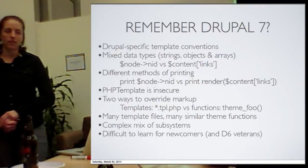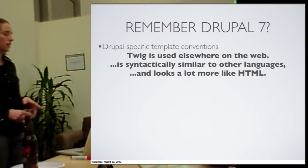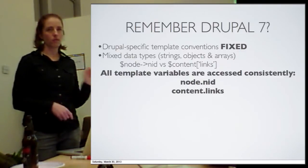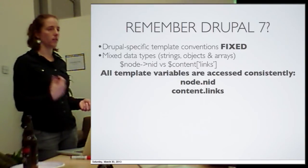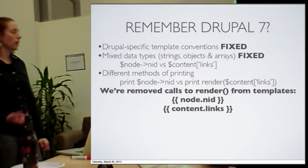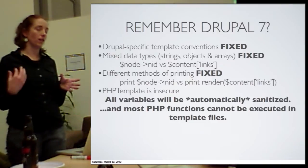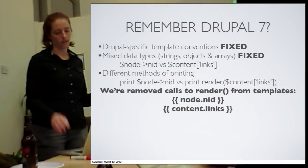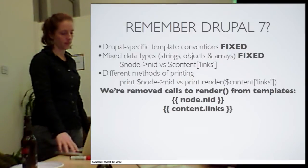Let's go through the list of problems we had in Drupal 7 and see how close we're getting. First: Drupal-specific template conventions — Twig exists elsewhere in the world, is syntactically similar to other languages, and looks a lot like HTML, which front-end developers are used to. Solved. Second: mixed data types — those things will always exist in Drupal, but we've masked that from the front-end developer. Whether it's an object or an array, you always print it the same way with a dot operator. Solved. Third: different methods of printing — in our conversion to Twig we've removed all calls to render from template files. Twig decides whether to call render or not when inserting the variable. You just use the curly brackets and Twig handles the rest. Solved.